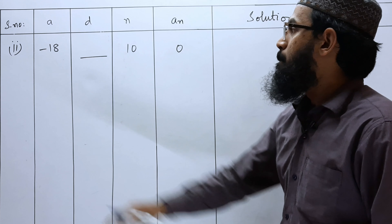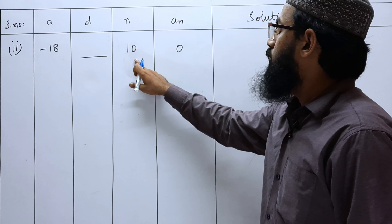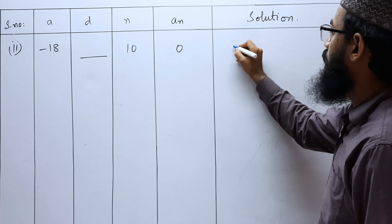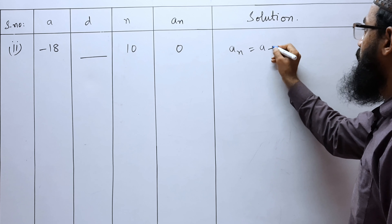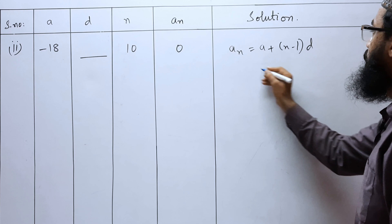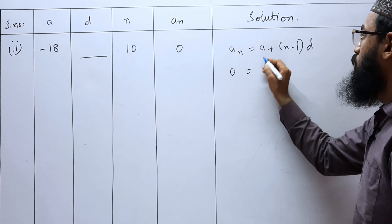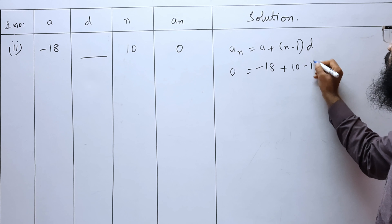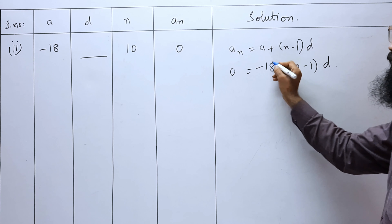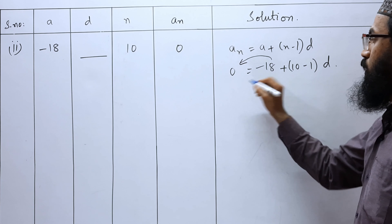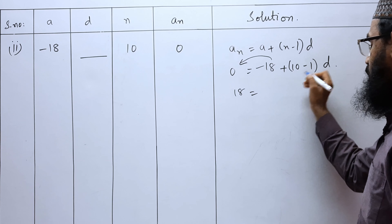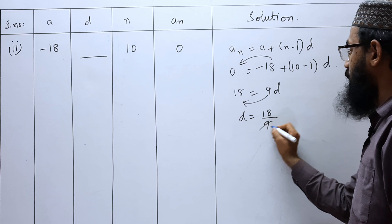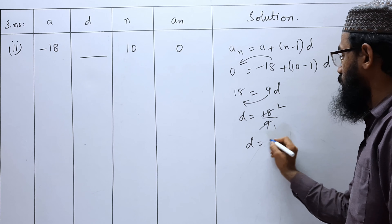Second bit: A is minus 18, D we have to find, N is 10, and AN is 0. Substituting in the nth term formula: AN equals A plus (N minus 1) into D. So, 0 equals minus 18 plus (10 minus 1) into D. Moving minus 18 to the other side: 18 equals 9D. Therefore, D equals 18 divided by 9, so D is equal to 2.